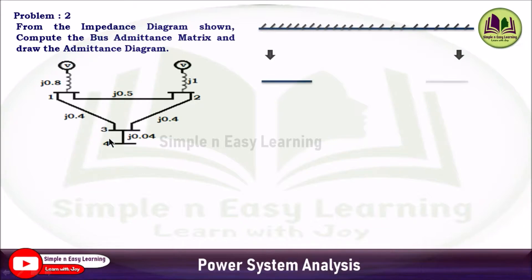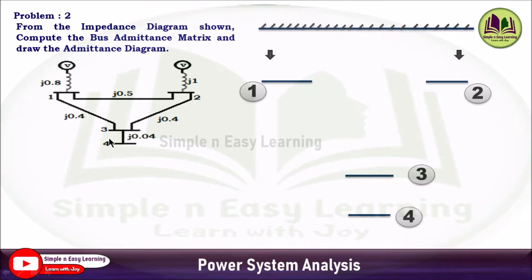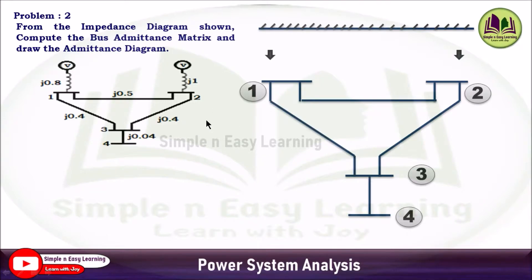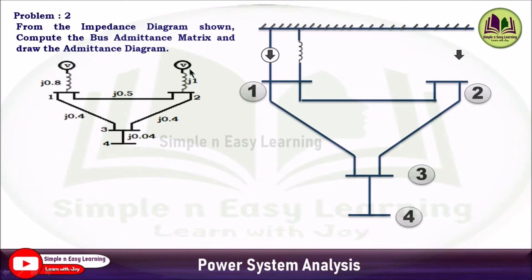This is a four-bus system, so draw the four lines as in the impedance diagram and name the buses one, two, three, and four. Join the lines: 1-2, 2-3, 1-3, and 3-4. Now we represent the impedances connected between the buses. The voltage source connected in series with impedance j0.8 at bus one is represented in the admittance diagram as a current source in parallel with the impedance. Similarly, at bus two, a voltage source in series with j1 impedance becomes a current source in parallel with the impedance.